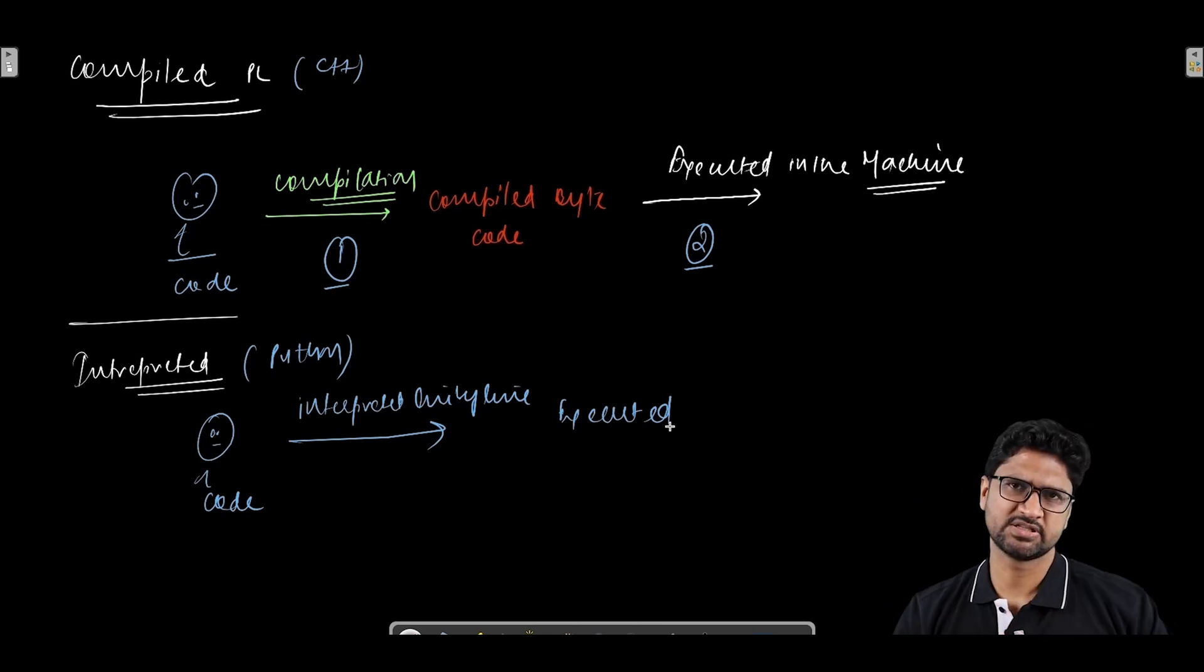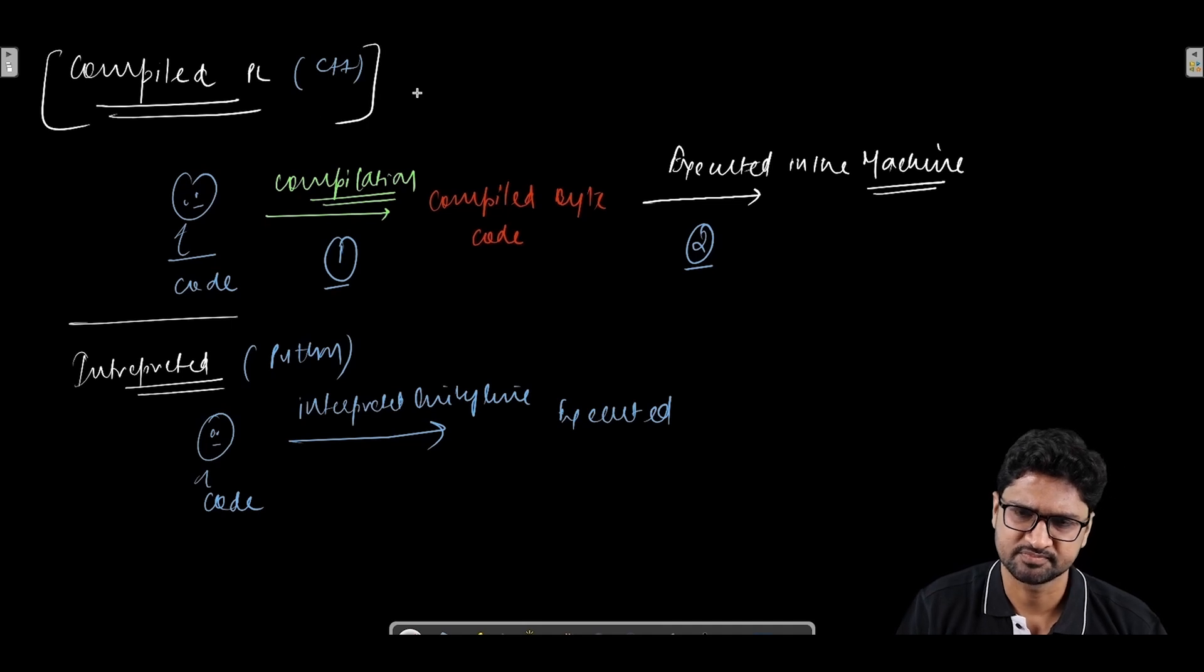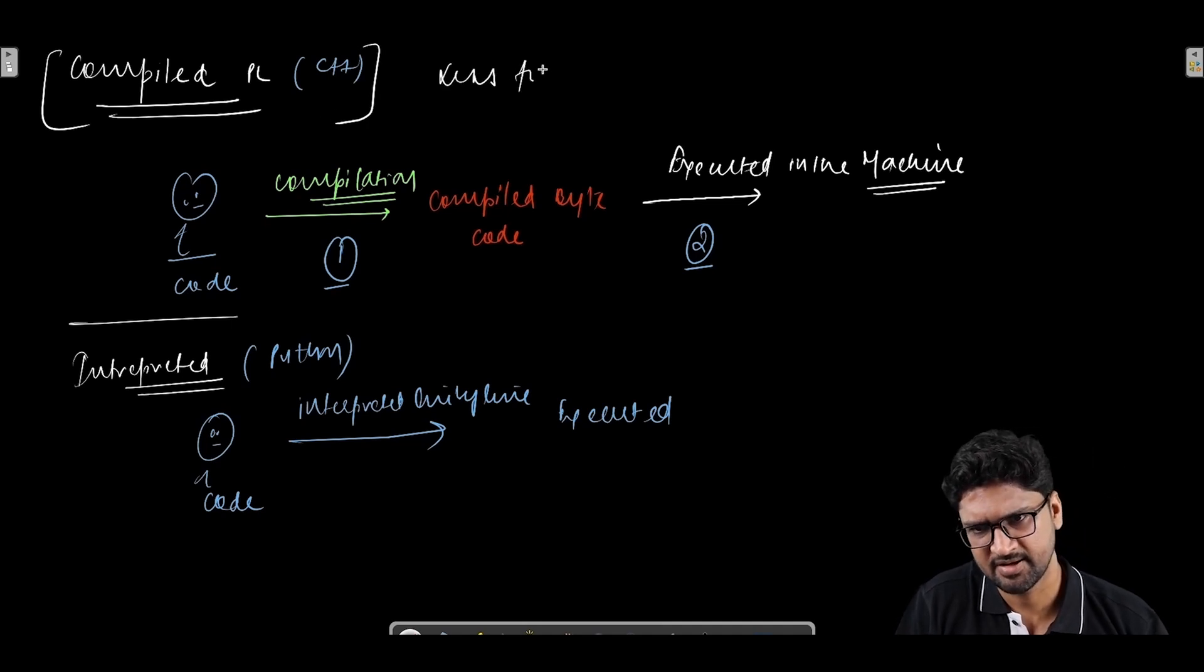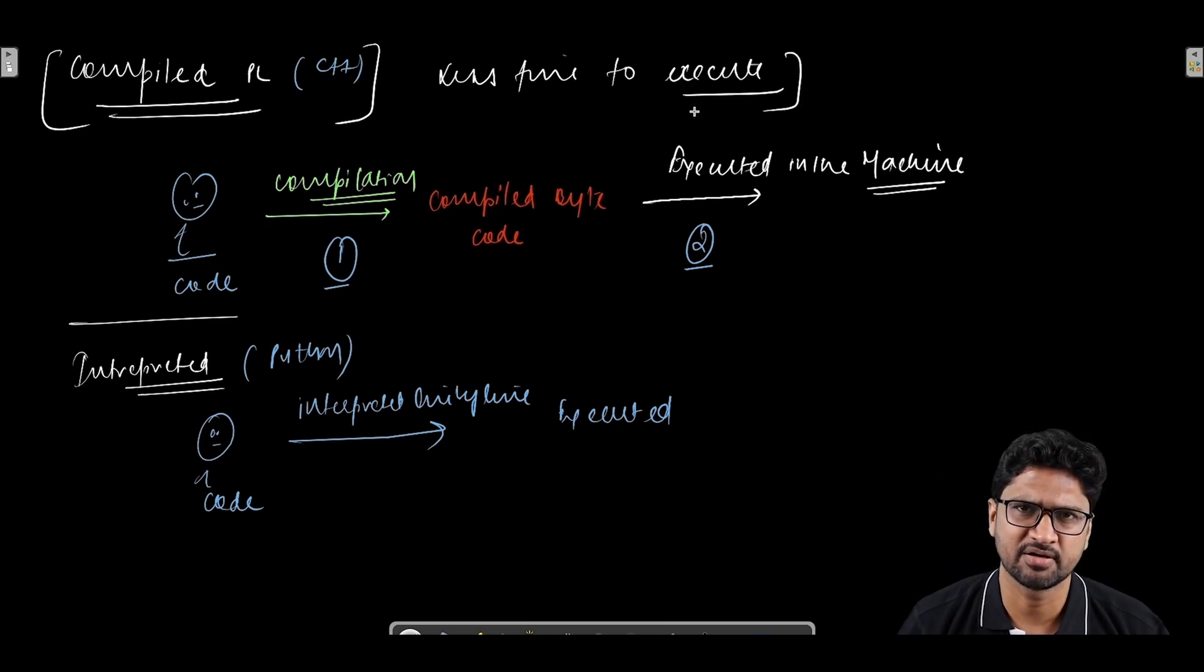In interpreted programming language, you execute and do the check at the same time. These are the two different modes. Now can you tell me which one will take less time to execute? In the second case when it's interpreted, in the execution time you are also executing but at the same time you're also checking, so obviously it will take more time. On the other hand, in the case of compiled programming language, the code is already compiled, it's already in byte code form.